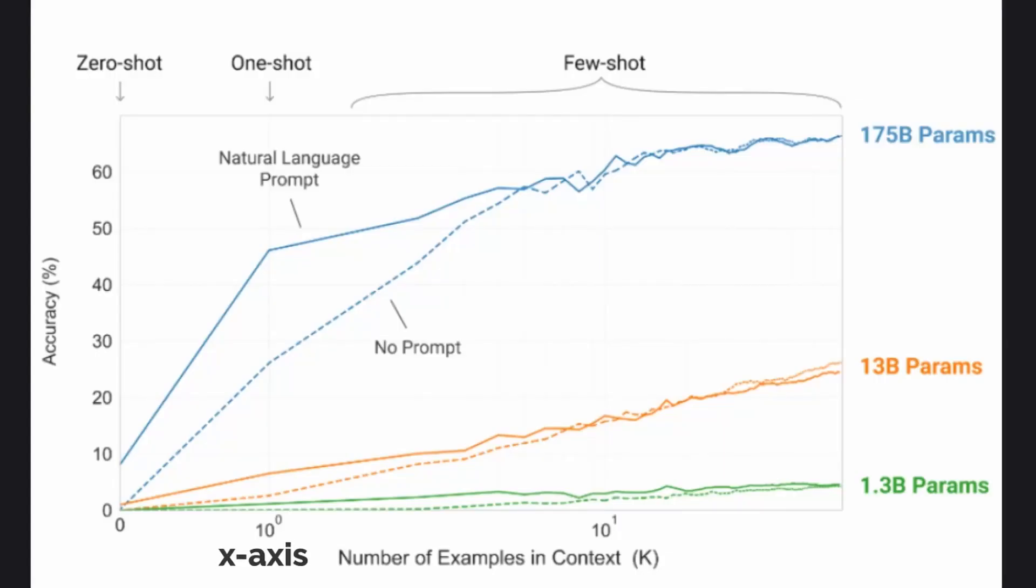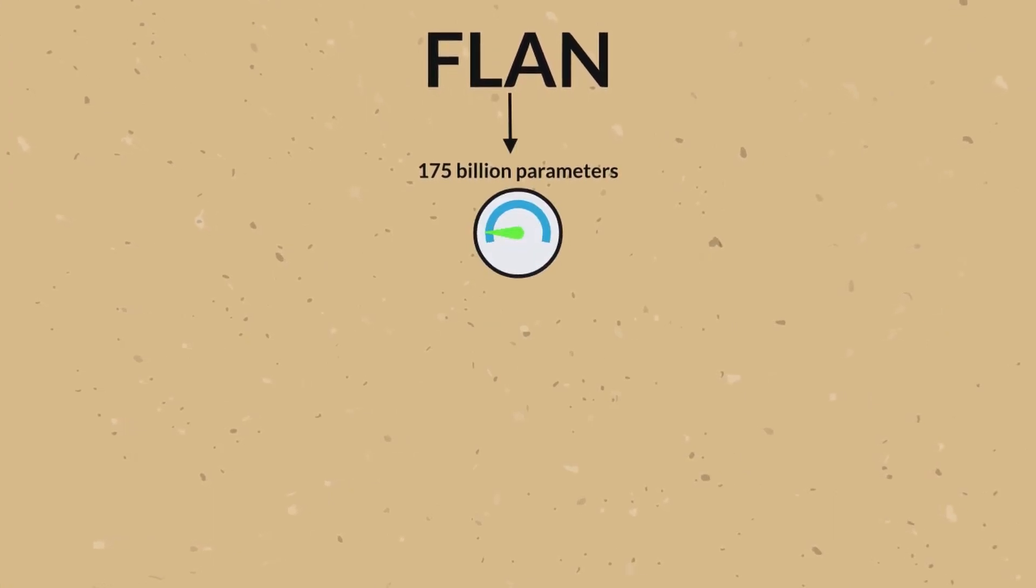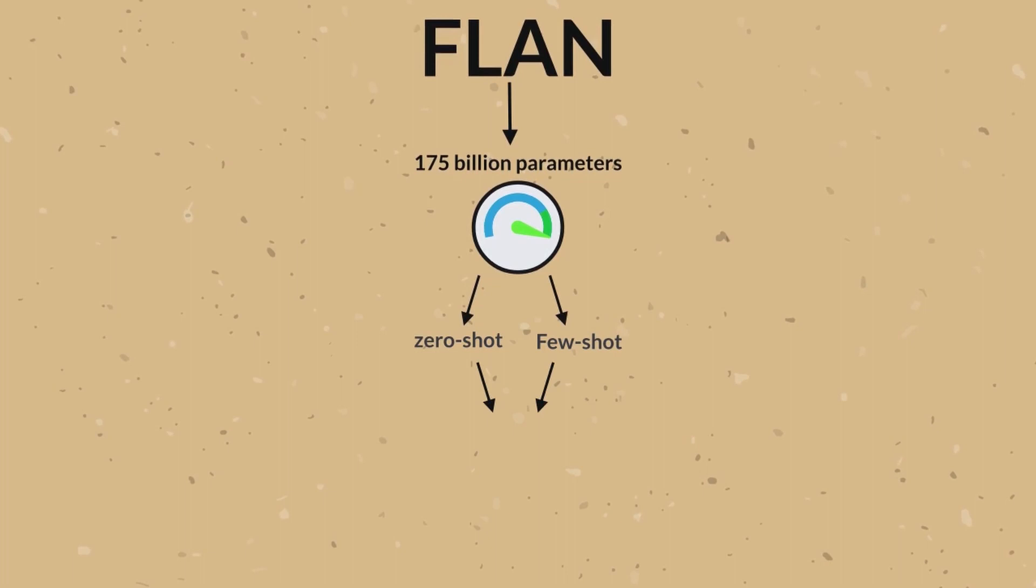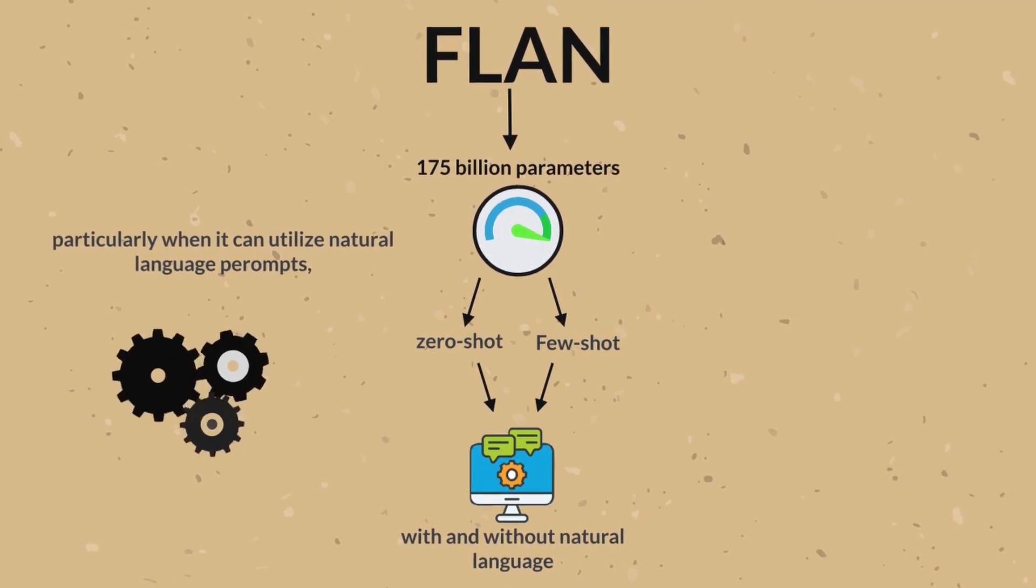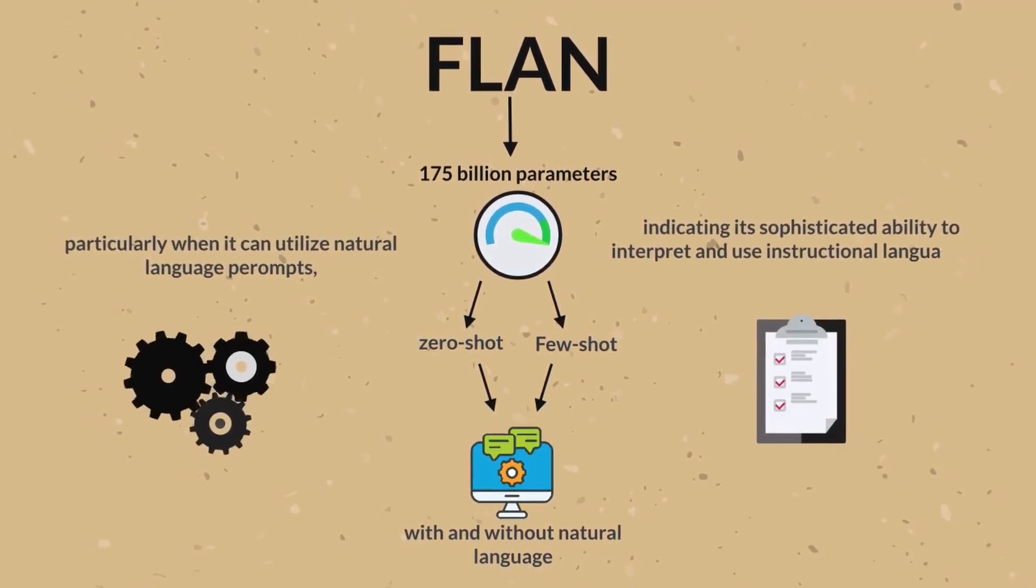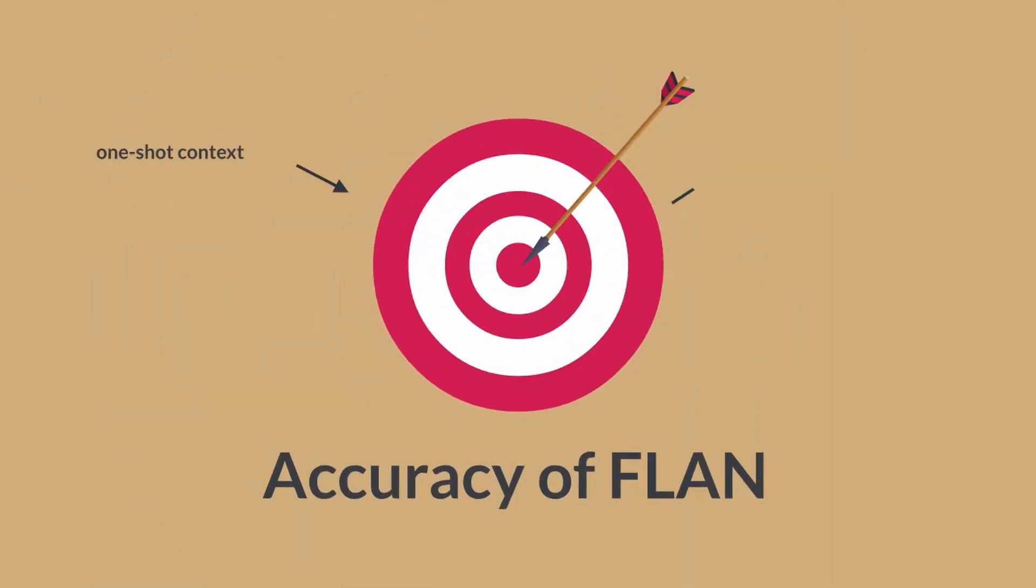The x-axis displays the number of examples in context, ranging from 0 to 10,000, while the y-axis represents the accuracy percentage. Two conditions are plotted for each model size: natural language prompt, where the task is introduced with an explanatory prompt, and no prompt, where the model attempts the task without any explanatory context. For Flan, 175 billion parameters, both zero-shot and few-shot performance are plotted with and without natural language prompts. It's clear that Flan excels, particularly when it can utilize natural language prompts, indicating its sophisticated ability to interpret and use instructional language for task performance. The accuracy of Flan increases sharply in the one-shot context, indicating its robust capacity to rapidly adapt to new tasks with minimal data.